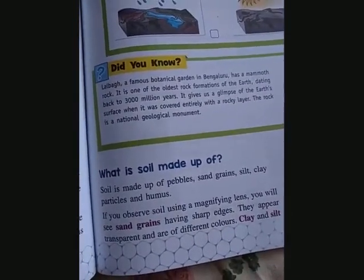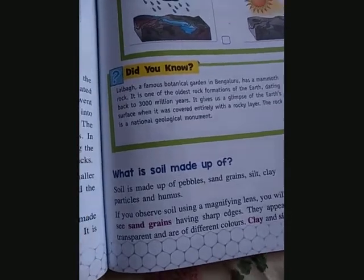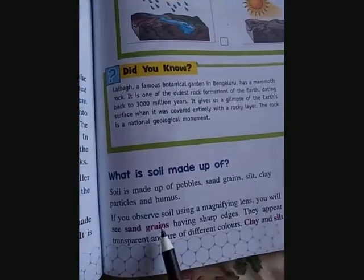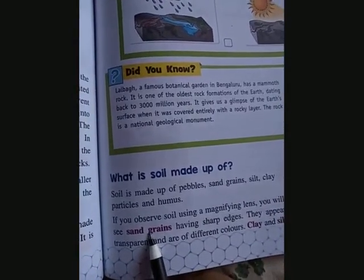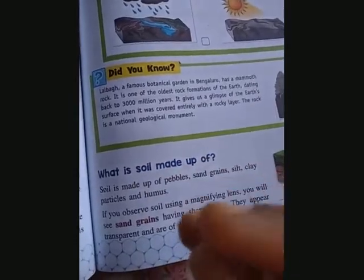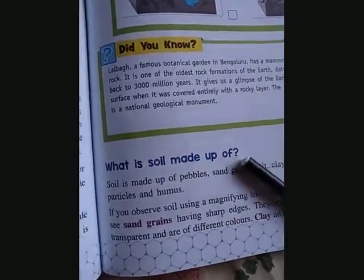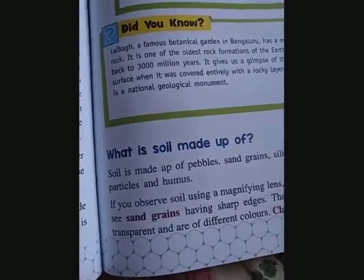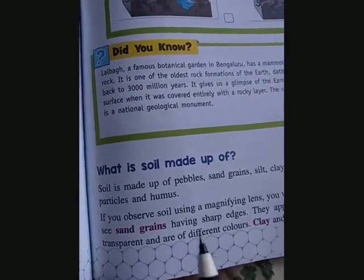If we take some soil sample and use a magnifying glass, we can easily see the sand grains because they have sharp edges, and we can feel them. If we take a small amount of soil and rub it with a hand, we can easily feel the sand grains. They are transparent and of different colors — brown, light brown, yellowish — with variation depending upon the different places.